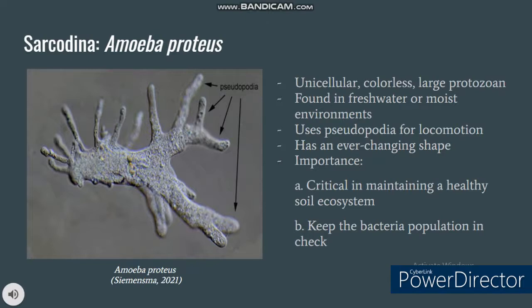We have here some representative organisms of protozoa. First, we have Amoeba proteus, a unicellular, colorless, large protozoan that belongs to the phylum Sarcodina. Amoeba proteus is found in freshwater or moist environments dominated by soil or plants. For locomotion, this amoeba uses pseudopodia — literally meaning false feet. The pseudopodia of an amoeba are not permanent; they are only formed when needed and disappear after being used, granting the microbe an ability to extend and contract into any shape. Amoeba proteus plays an important role in maintaining a healthy soil ecosystem, mainly because it recycles nutrients used by bacteria and keeps the bacteria population in check.